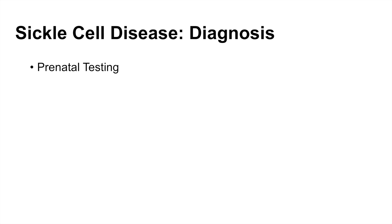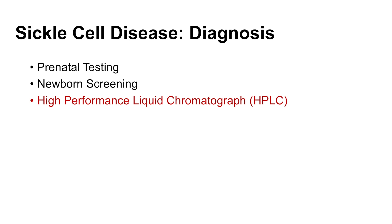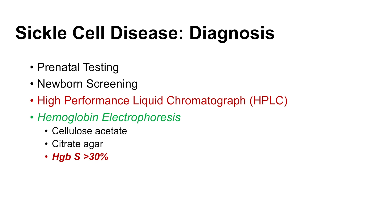How do you diagnose sickle cell disease? There are prenatal tests to determine if a fetus carries sickle cell alleles, and newborn screenings to see if a newborn infant carries a mutated allele. High-performance liquid chromatography can be performed to assess, and hemoglobin electrophoresis — using either cellulose acetate or citrate agar gel — can be used to diagnose sickle cell disease. If more than 30% hemoglobin S is found, these patients most likely have sickle cell disease.